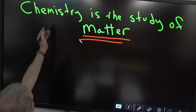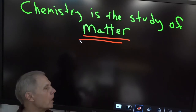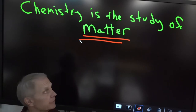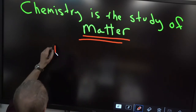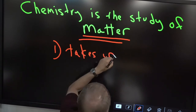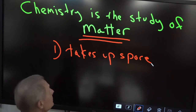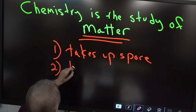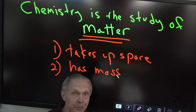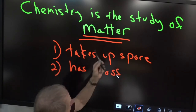Chemistry is the study of matter. You've all covered what matter is in bio or earth science — matter takes up space and has mass. Like this pen: it takes up space and has mass. That is matter.